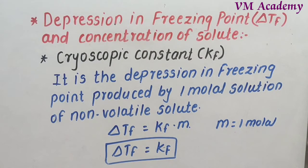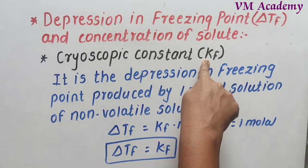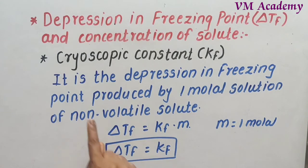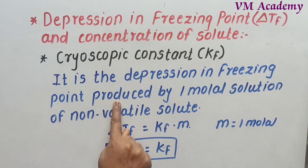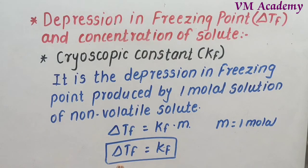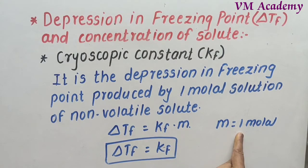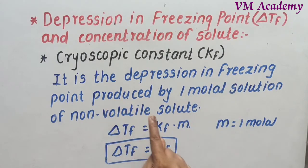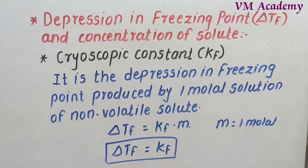Now let's define the cryoscopic constant, as questions are asked about this. The cryoscopic constant is the depression in freezing point produced when one molal solution of non-volatile solute is used. When the solution concentration is one molal, the depression in freezing point becomes equal to KF — since delta TF = KF × 1 = KF. So KF equals delta TF when molality is one molal, and that value is called the cryoscopic constant.